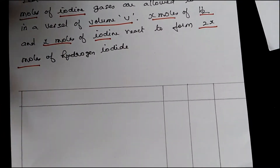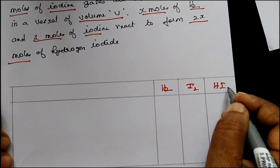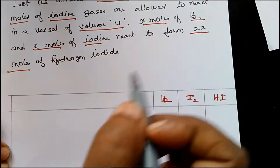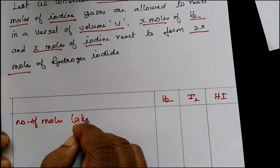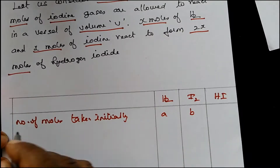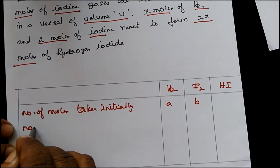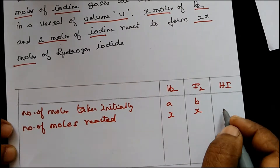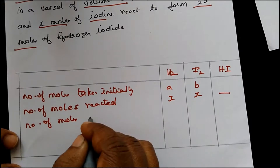You tabulate all this data in a tabular column. You have hydrogen, iodine, and hydrogen iodide. First, you write A moles of hydrogen and B moles of iodine as the initial number of moles. Then, X moles of hydrogen and X moles of iodine are the number of moles reacted. We cannot predict how much HI is formed at this stage.